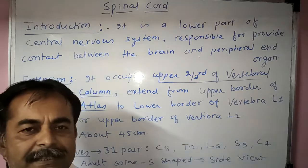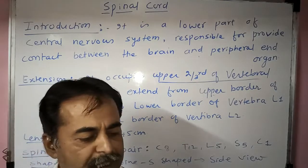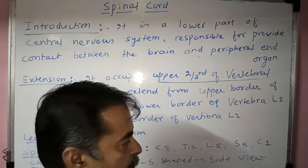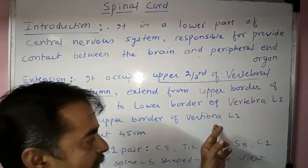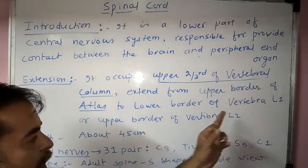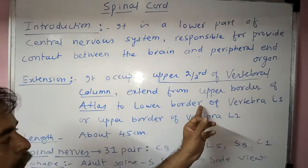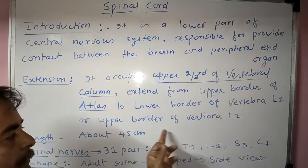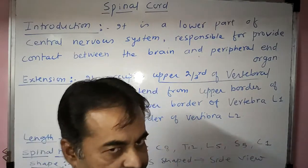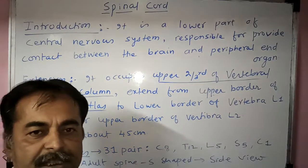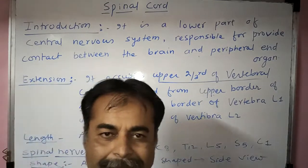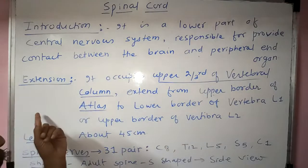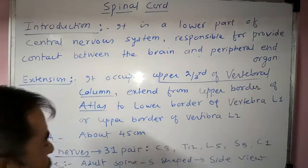That is why the lumbar puncture is done between L3 and L4, or L4 and L5 — because the spinal cord only extends to the lower border of L1 or the upper border of L2.